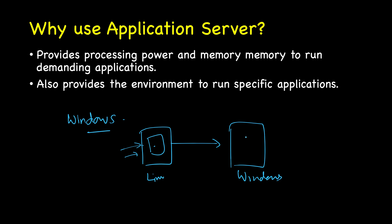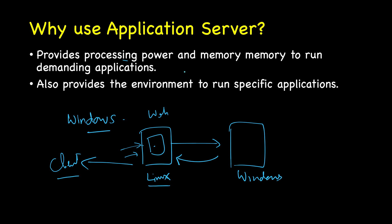In that case, the Linux web server sends the input data to a Windows-based application server, which processes the data and returns the result to the web server. The result can then be output as a response on the web browser for the client. So the application server is necessary when the web server cannot provide the required environment. It provides processing power, memory, and the right environment to run specific applications. I hope this cleared some of your doubts regarding web server and application server. Thank you.